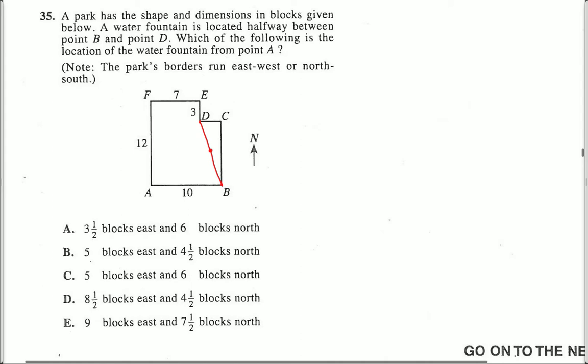Now it's pretty easy to eliminate a lot of your answer choices just by drawing in the water fountain. If we're going from point A over here to this water fountain and up here, the idea is that I'm going about eight or nine or ten blocks over. It can't be three and a half, five or five blocks east. It's way more than that.